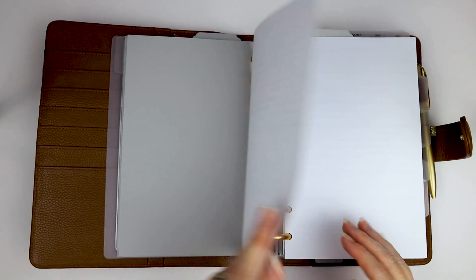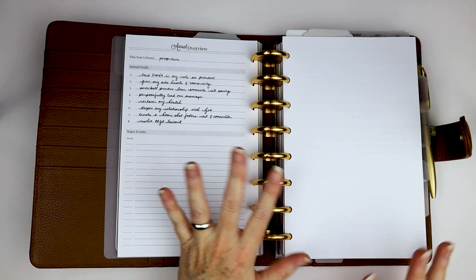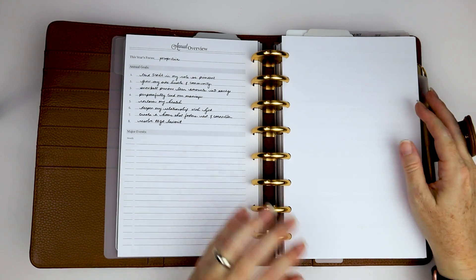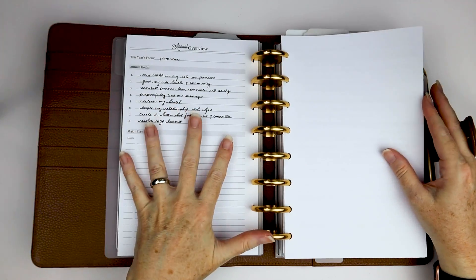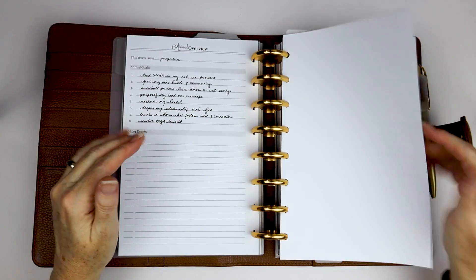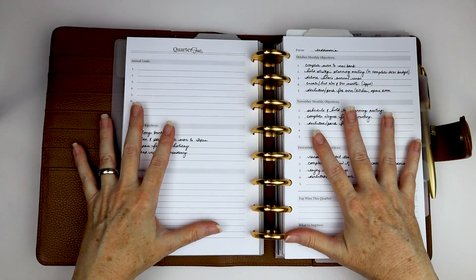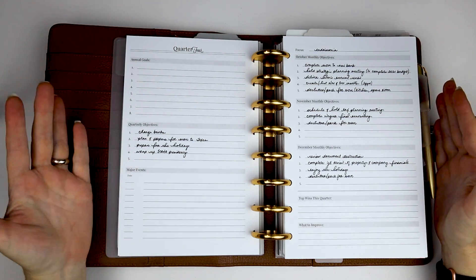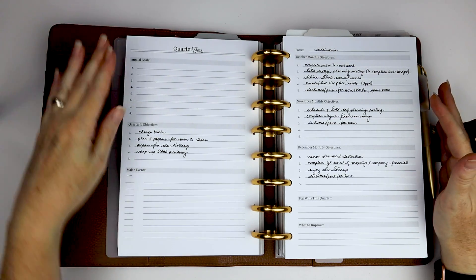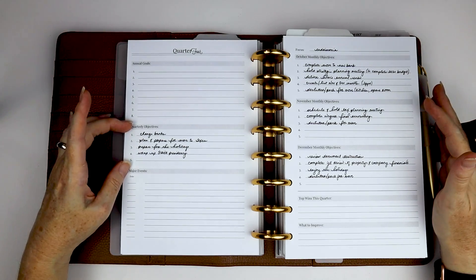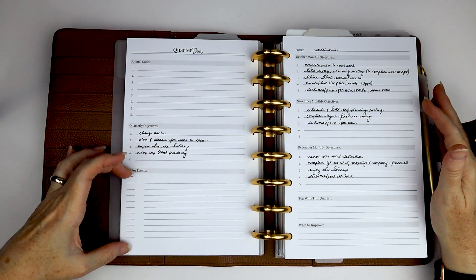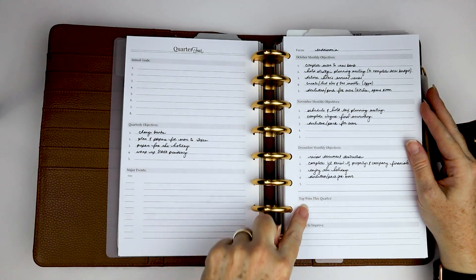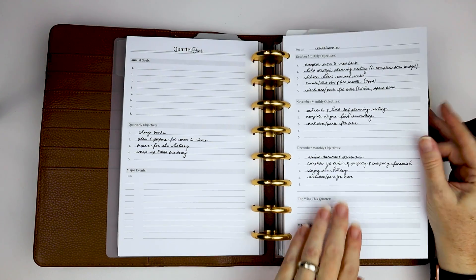And then we get to the first section, which is my goal setting section. So these are my goal setting inserts. I have kind of cobbled them together a little bit just because I started using this planner kind of towards the end of the year. So I have my annual overview with my goals. And then I jump in at quarter four. If you have watched videos on this before, these are kind of the standard thing. There's a spot for annual goals, quarterly objectives for the quarter, major events, and then October, November, December monthly objectives, and then top wins, what to improve.